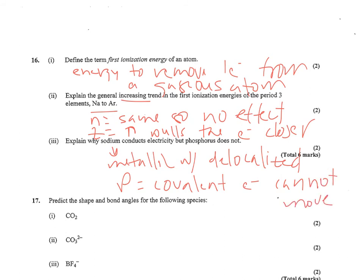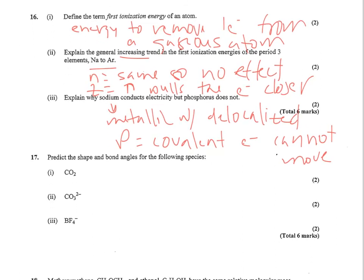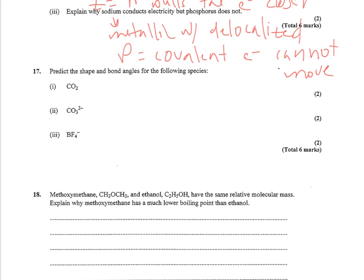Number 17 wants you to predict the shape and bond angles for the following species. So CO2, if you draw the Lewis structure, it's got two oxygen double bonded and no lone pairs. So this shape is just going to be linear and the bond angle is going to be 180°.